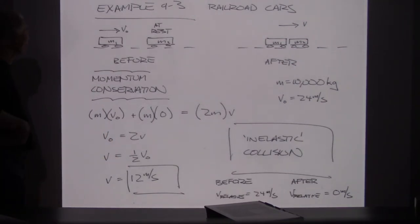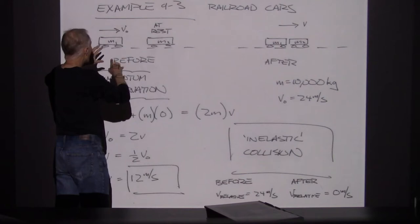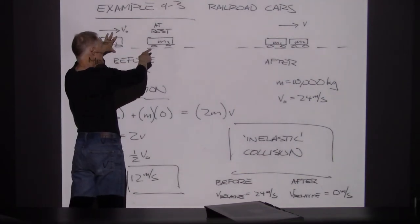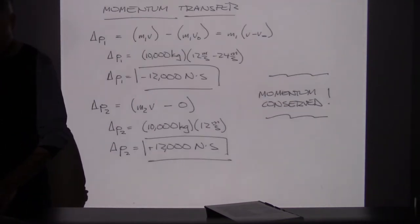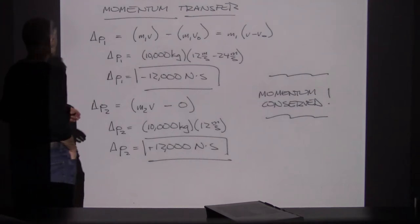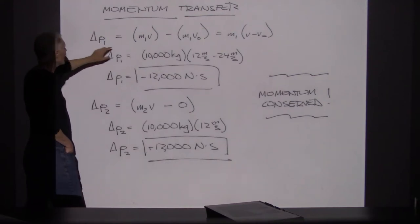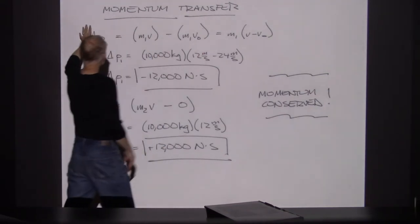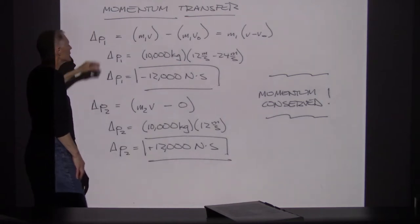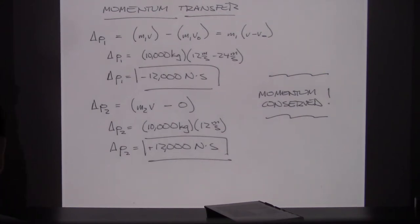What happened was object 1 had a bunch of momentum and transferred half of its momentum to object 2, and now both objects are moving together. It's good to think in terms of momentum transfer. The change in momentum for object 1 — final minus initial — tells us the delta P. We use the symbol P for momentum. The difference in momentum from after compared with before is the mass of the railroad car times 12 meters per second minus 24.